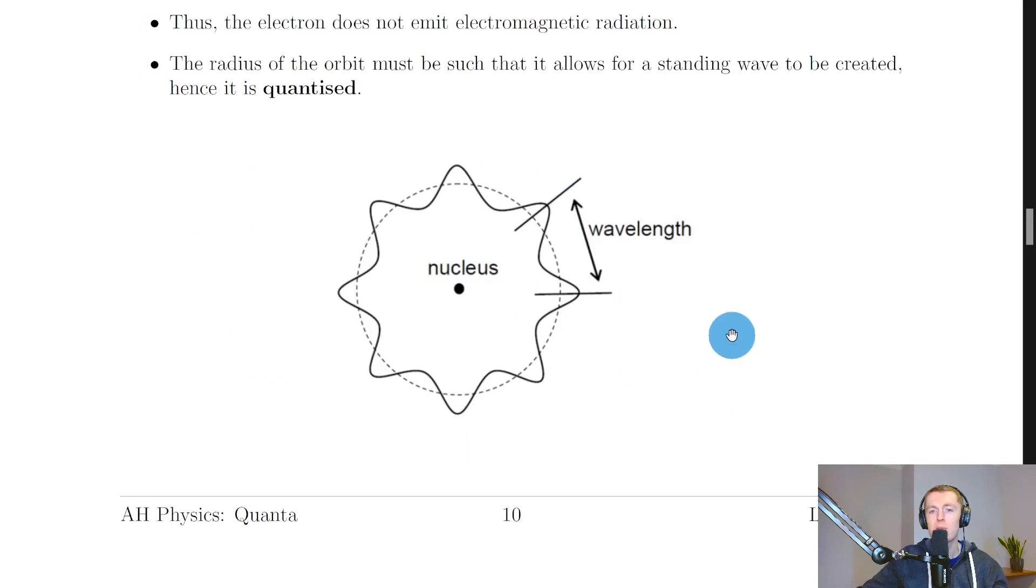So if you look here, we've got a diagram of an atom as proposed by de Broglie, where we've got a nucleus in the center, and then we've got electrons which are appearing as standing waves. And you'll notice that between any two crests, for example, we have one wavelength.